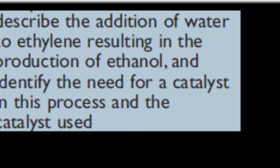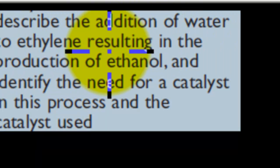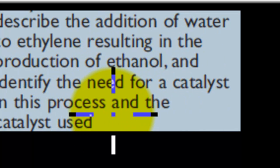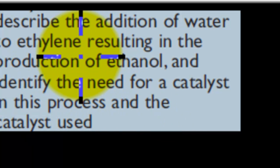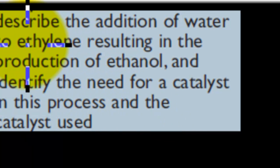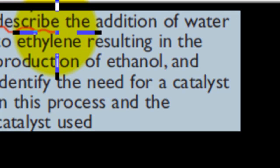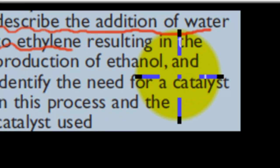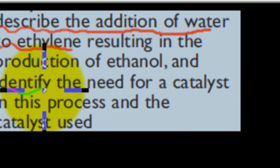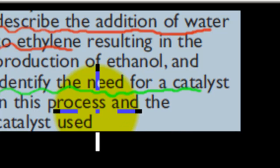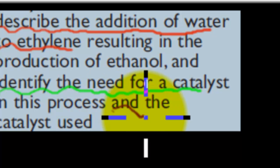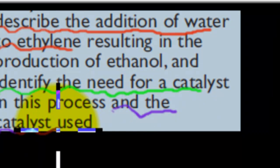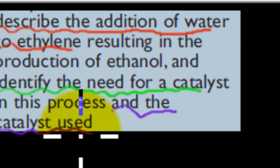The actual dot point says: describe the addition of water to ethylene resulting in the production of ethanol, and identify the need for a catalyst in this process and the catalyst used. There are a couple of different steps and we're going to go through them step by step.